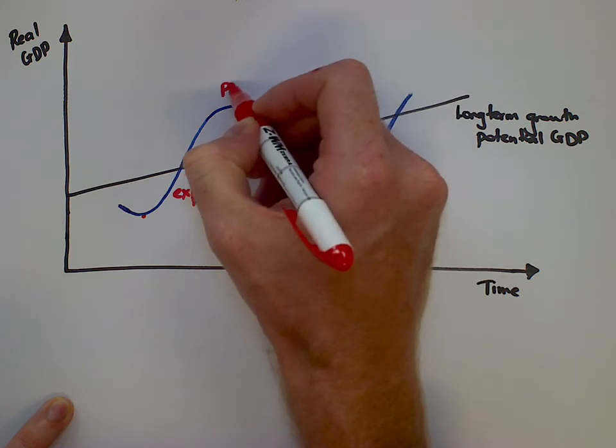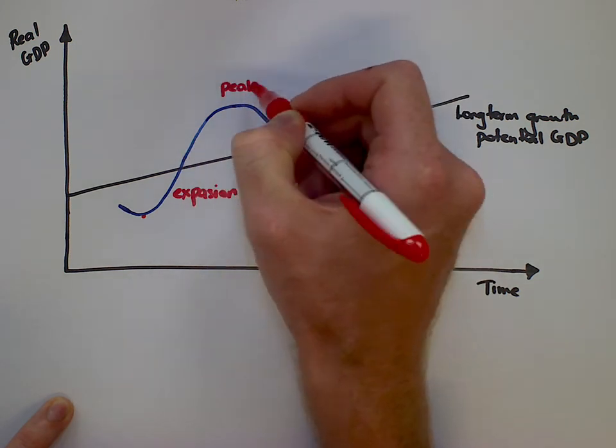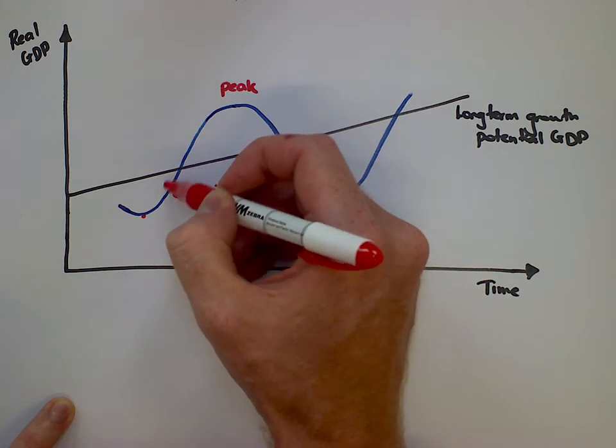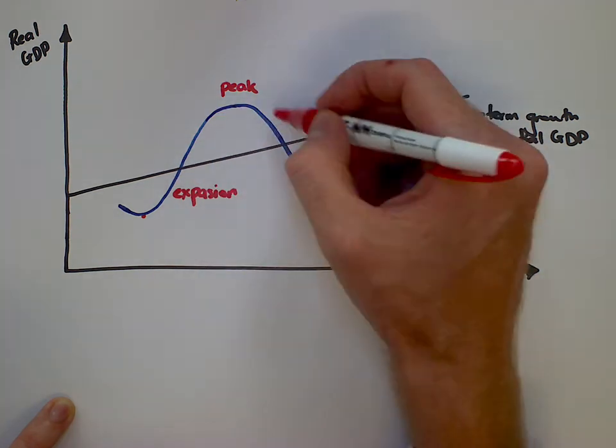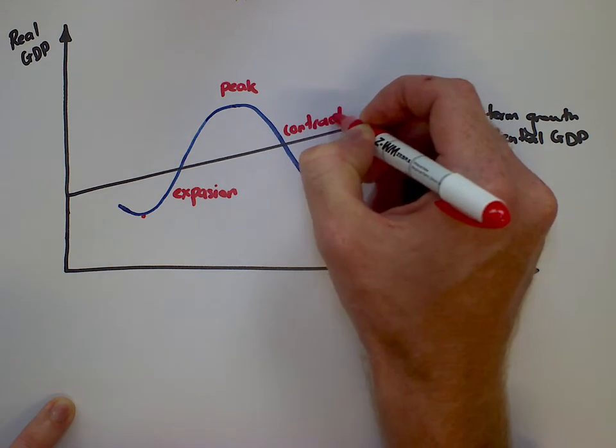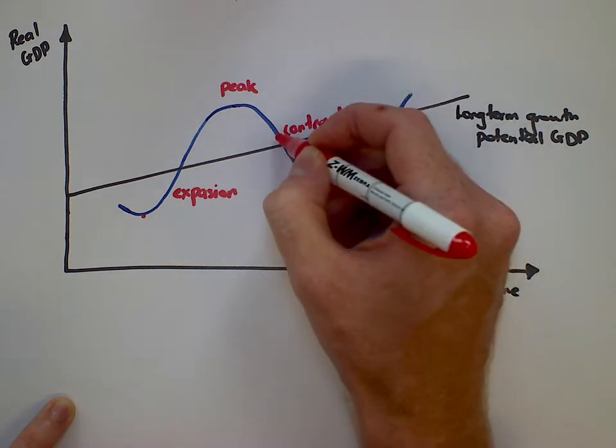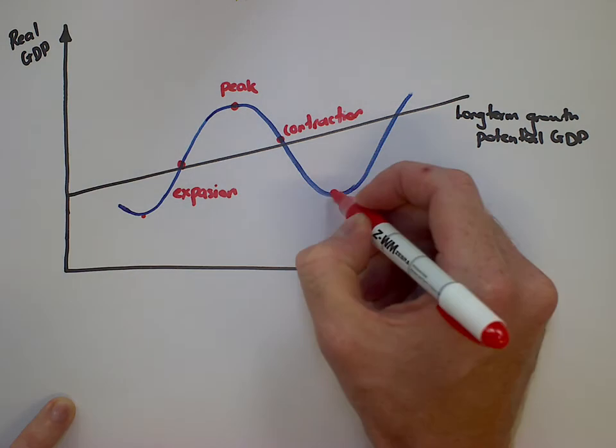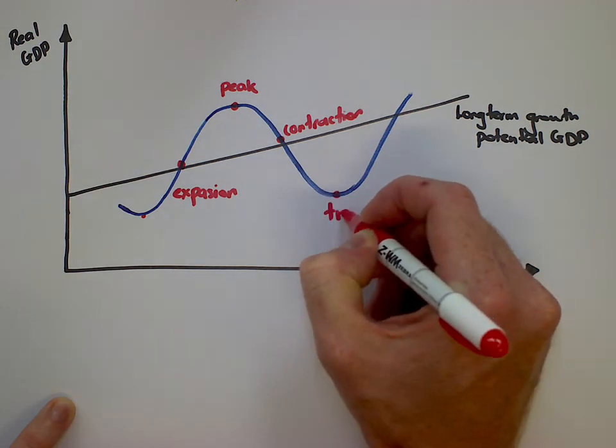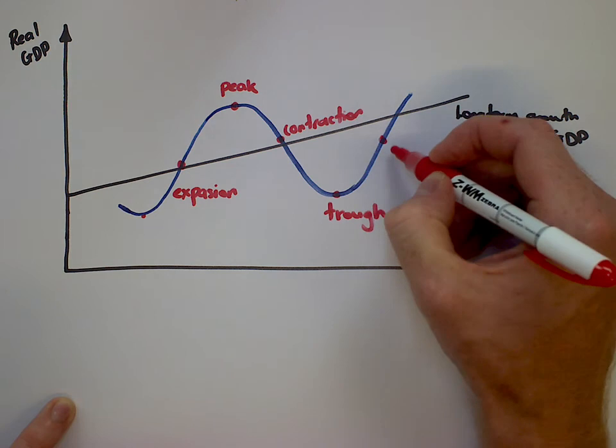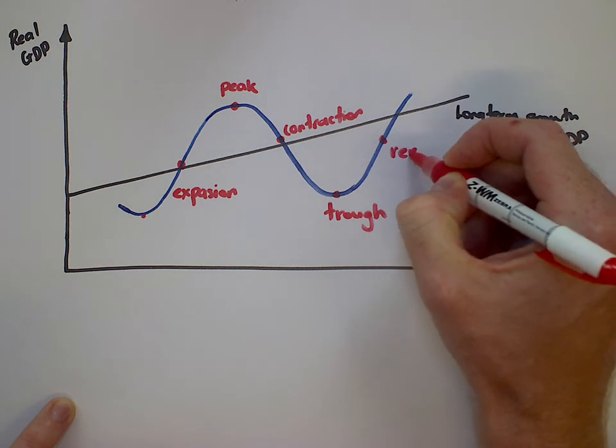On the top we typically call this a peak, peak of economic growth or a baby boom. So expansion is the idea of going up this way, peak, coming into a period of a contraction of economic growth, and then the idea of a trough and then eventually this concept of a recovery.